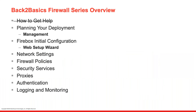In this Back to Basics Firewall series we covered how to get help in the previous session and talked about what to do with your different interfaces — really starting to plan your deployment. Whether you're a large shop or small shop, on a T-series box or a 4600 or 5600, this is all going to be relevant for you. We're going to talk about management and the different management interfaces, then get into Firebox initial configuration.